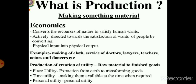Secondary production includes the manufacturing industry, turning out semi-finished and finished goods from raw materials and intermediate goods — for example, conversion of flour into bread, or iron ore into finished steel. These are generally described as manufacturing and construction industries.